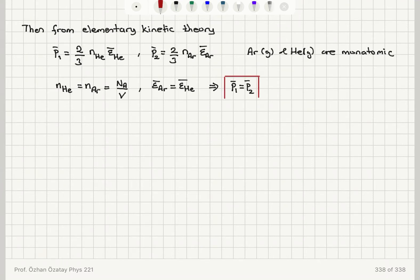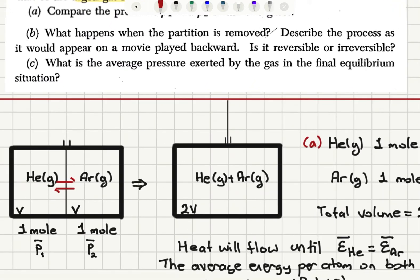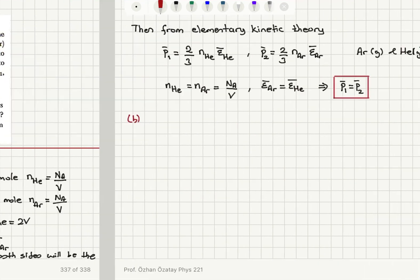So they will have the same mean pressure at equilibrium. Now Part B: the partition is removed. What happens? We will see helium and argon atoms mixing until they form a uniform distribution throughout the full space 2V, due to random collisions between molecules. In the backward movie, you would see the molecules re-separate so that helium is on one side and argon on the other. This is an irreversible process because it would require the atoms to move in a very specific pattern to reform the initial configuration.